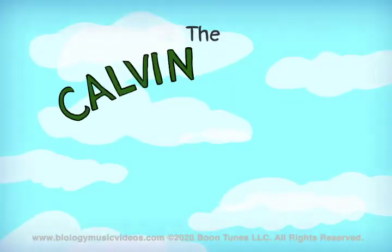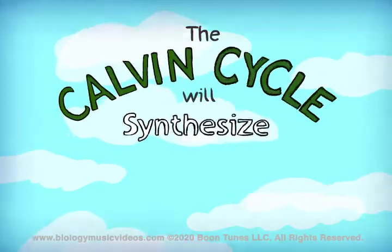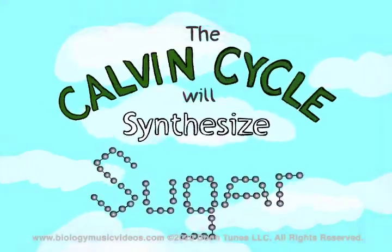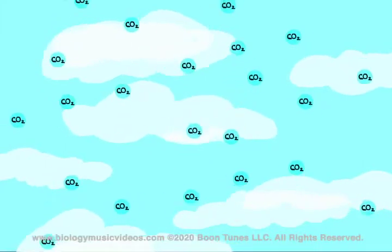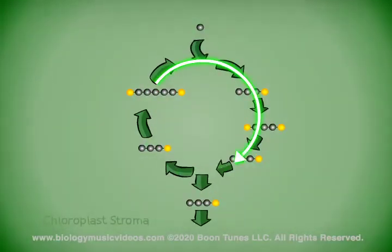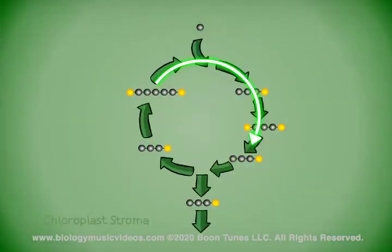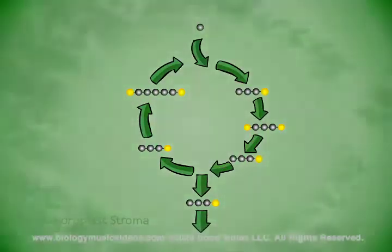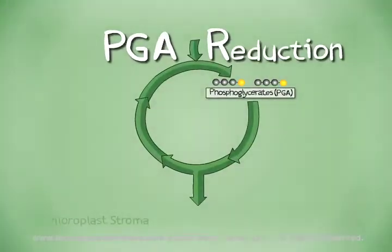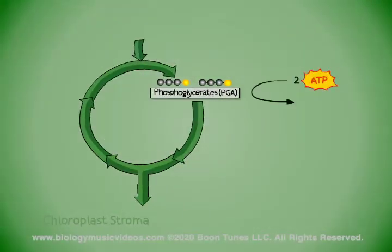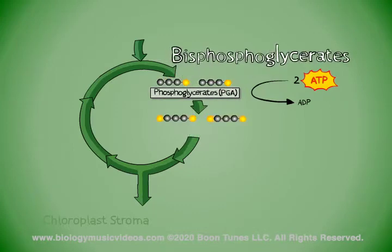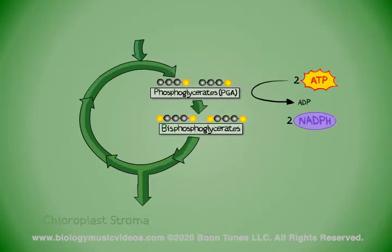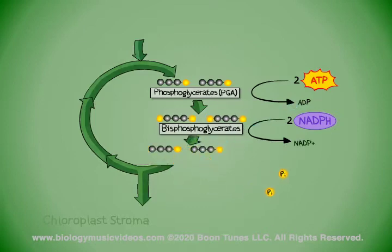The Calvin Cycle will synthesize sugar from carbon dioxide, over and over — spins and spins, finishing when the light begins. Now I will explain to you PGA reduction, or phase 2. ATP molecules give phosphate to the PGAs. Bisphosphoglycerates are produced, which NADPH will reduce. The bisphosphoglycerates are then changed and they lose phosphate from the carbon chains.